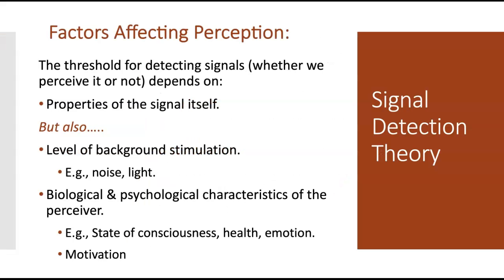Moving on to the various factors that affect how we perceive something. One factor is whether the stimulus is strong enough to be sensed in the first place — whether or not the stimulus meets the absolute threshold. If it doesn't, if sensation is not occurring, then perception can't occur either. The absolute threshold is the smallest amount of a stimulus needed to be detected at least 50% of the time.